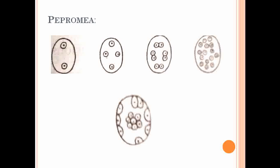Of the 16 nuclei, 8 move to the center and function as the secondary nucleus, 2 nuclei move towards the micropylar end and function as the egg apparatus, and the remaining 6 are arranged peripherally and function as antipodal cells. This is the Peperomia type of embryo sac, which is 16-nucleated.